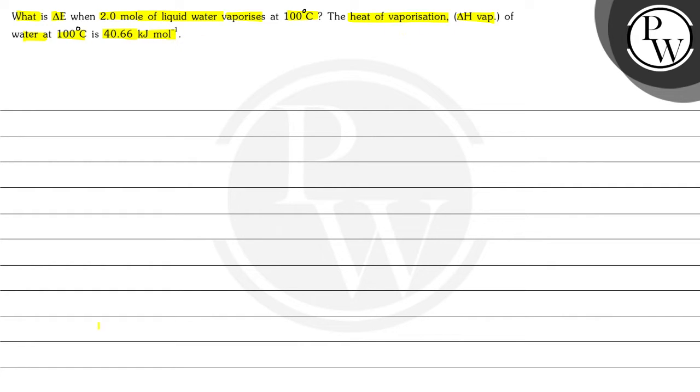We have to find the value of ΔE. First, we write our key concept: ΔH = ΔE + ΔN_g RT. Here, ΔN_g equals the change in number of gaseous moles.